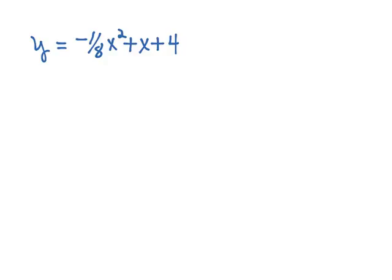The height in feet of a ball thrown by a child is modeled by the equation y equals negative one-eighth x squared plus x plus four, where x is the horizontal distance in feet from where the ball is thrown. We want to find how high the ball is when it is at its maximum height.